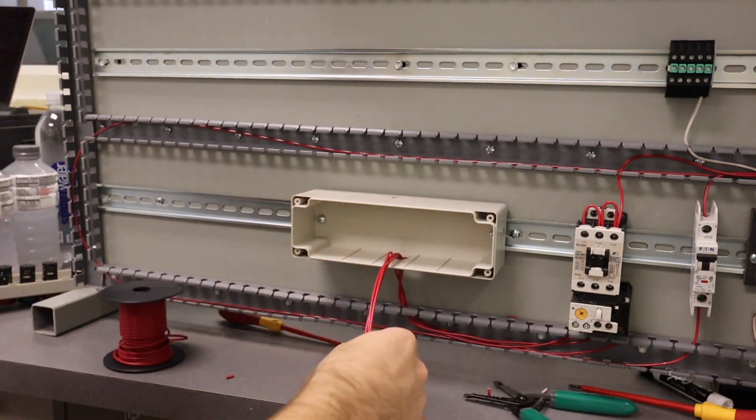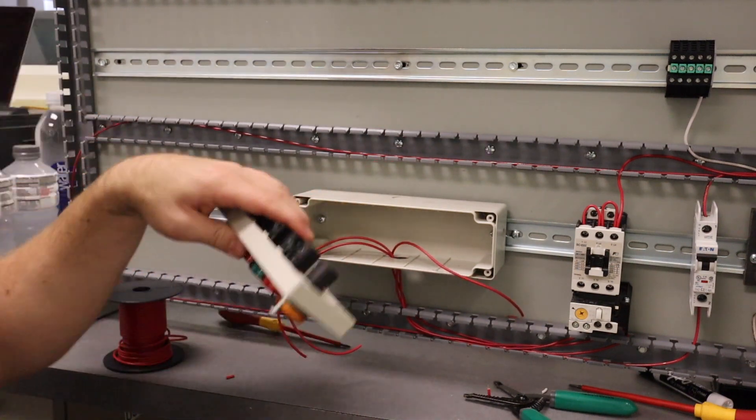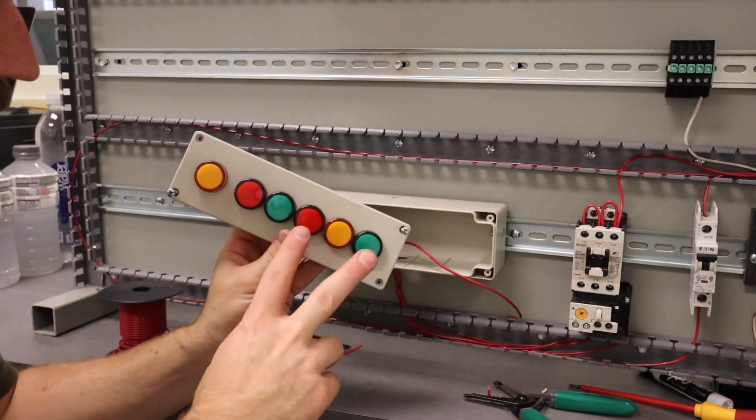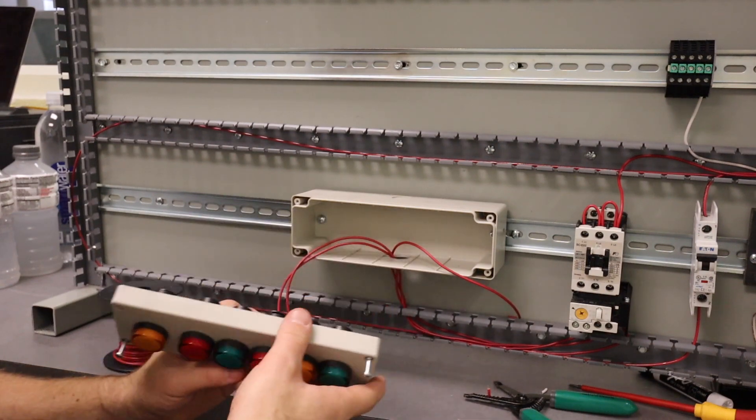So now that I've got all three of my wires here, what I'm going to do is I'm going to connect them to one side of three separate lights. I'm just going to do all mine on the end here. It doesn't matter what three you do.